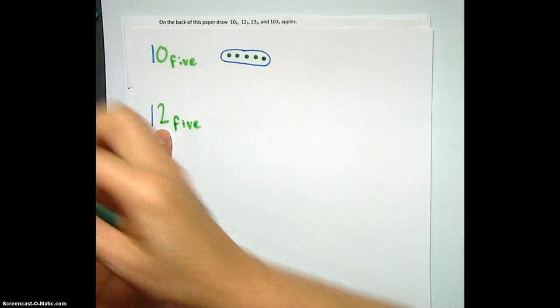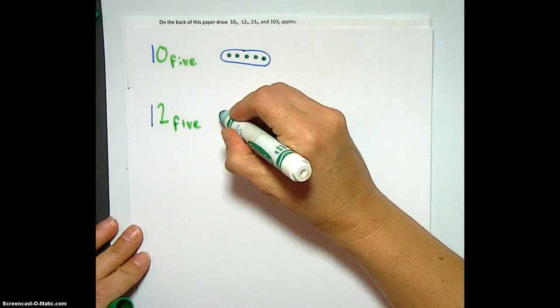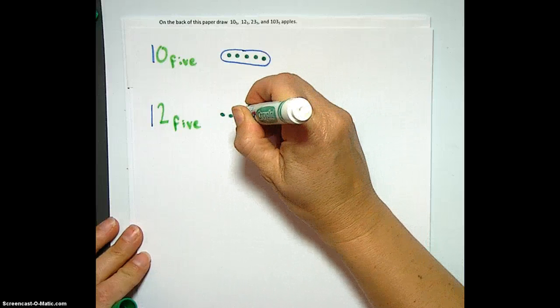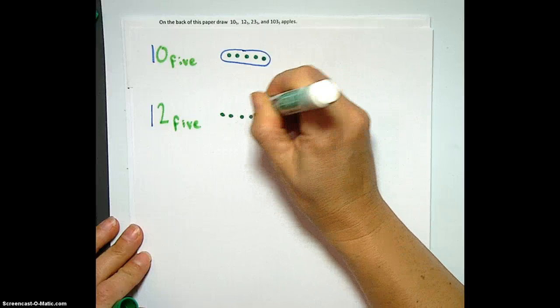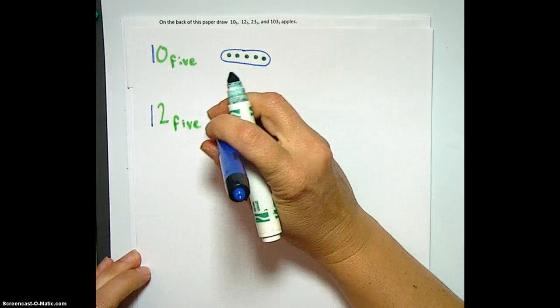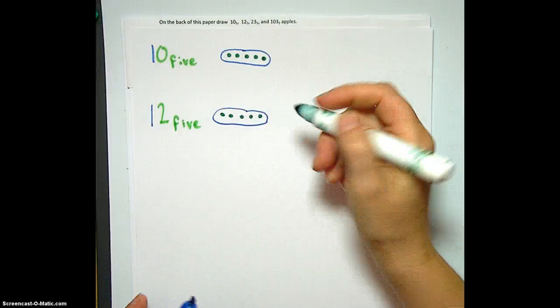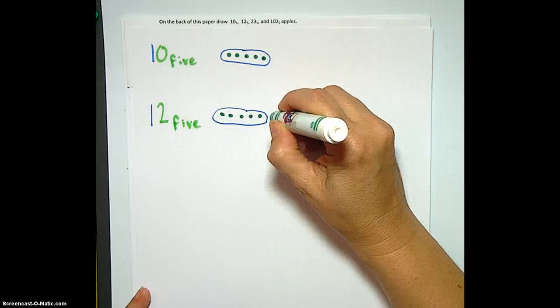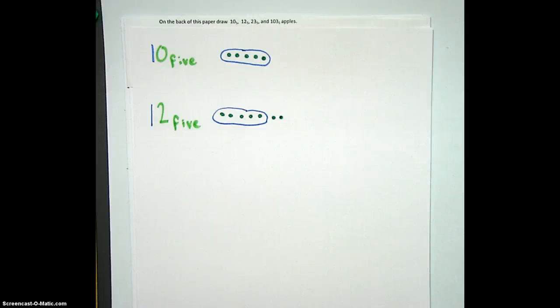So I'm going to use my magic apple drawing tool, because I'm not patient enough to draw apples, and we're going to count. We've got 1 apple, 2 apples, 3 apples, 4 apples, 10 base 5 apples, but we don't need 10 base 5. What do we need? We need 12 base 5. So let's keep going with our Granny Smith green apples. So we've got 10, 1, 12. Bam! We just drew 12 base 5 apples.